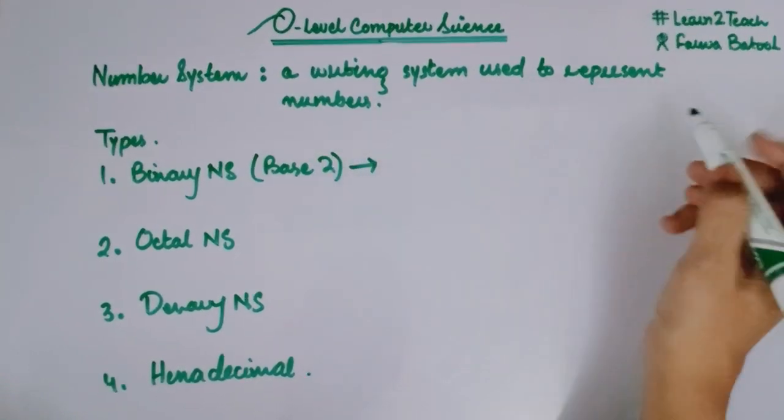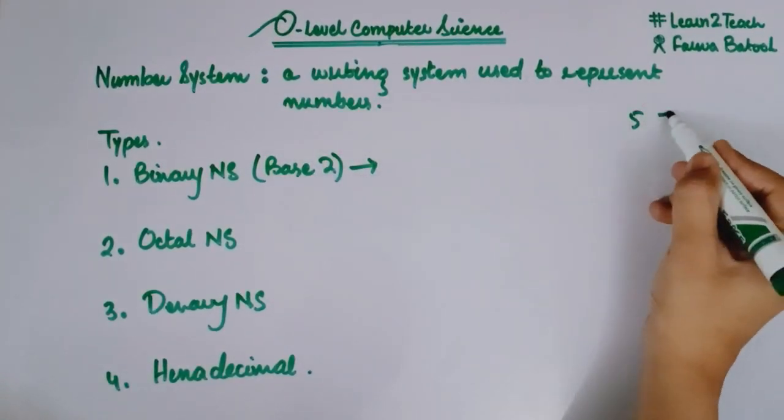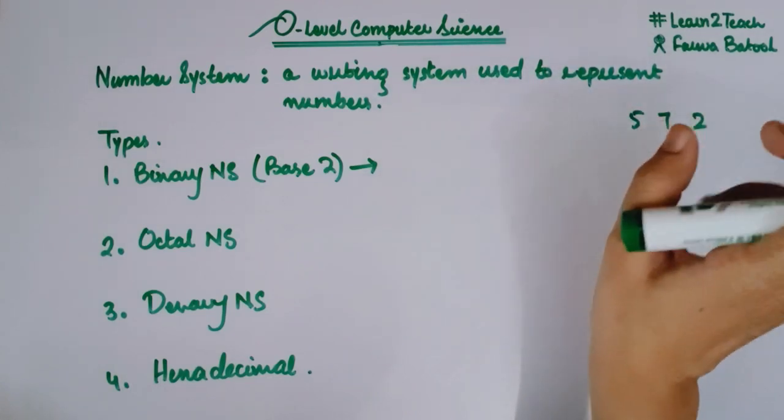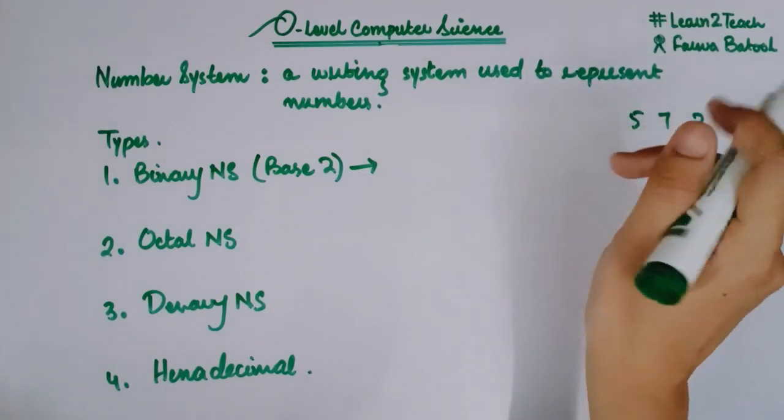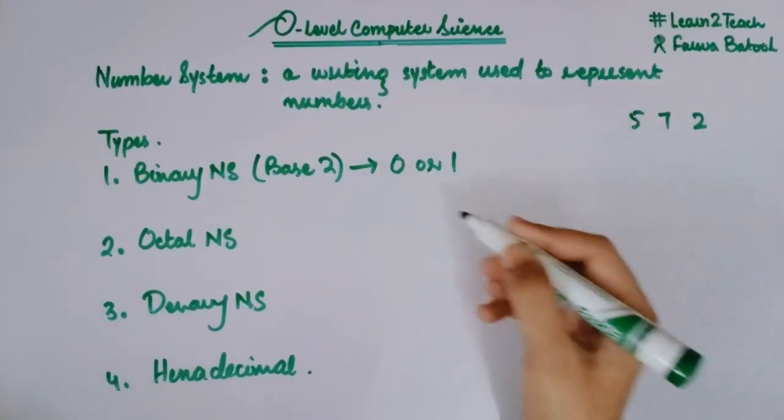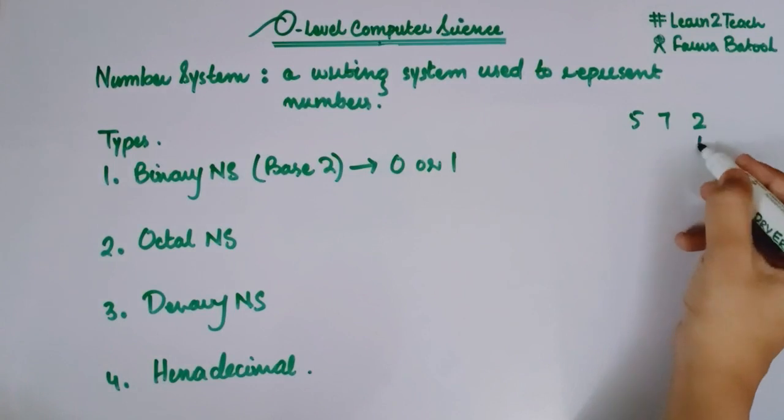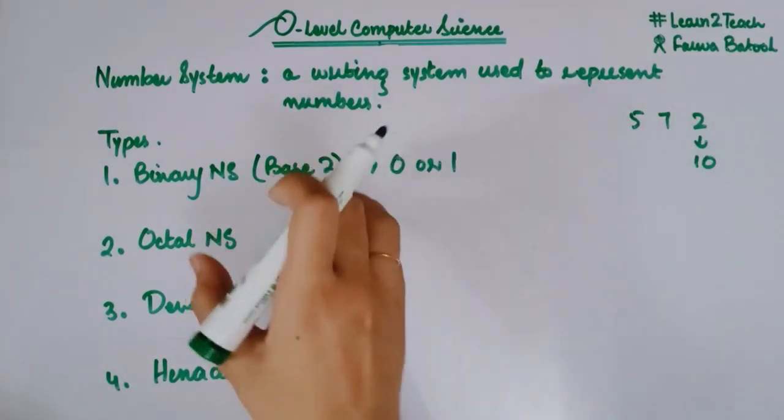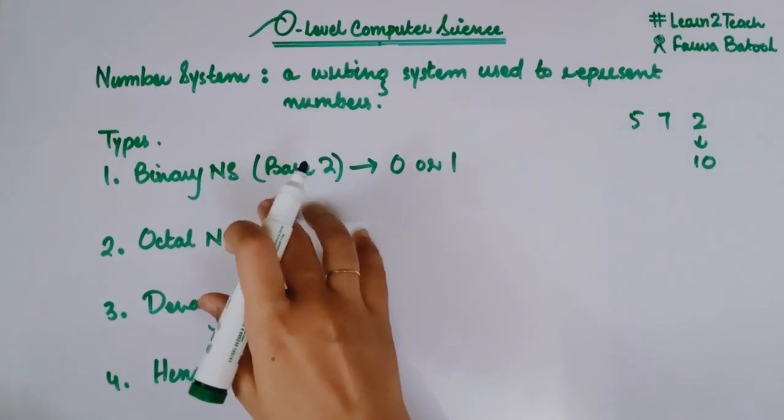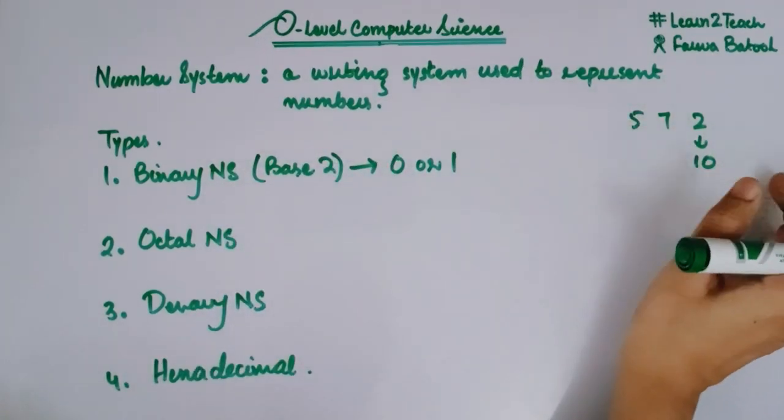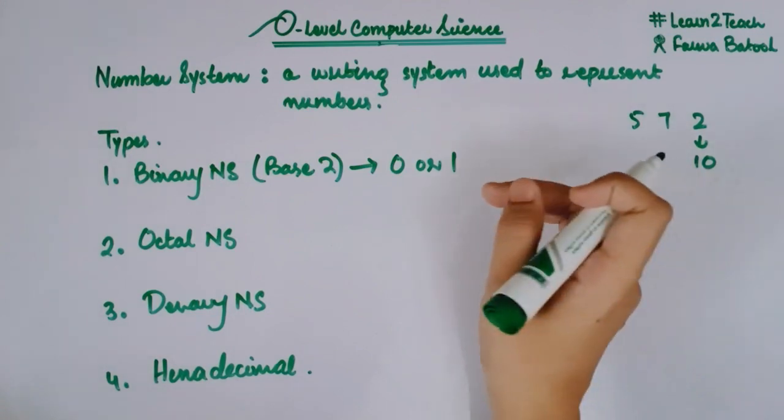The number can be anything. It can be five, it can be seven, it can be two, it can be any number. But that number is represented in either zero or one. Let's suppose two is represented as one zero. It is basically the binary number system where you are going to represent any number into zeros and one. So I hope it is clear.